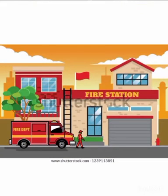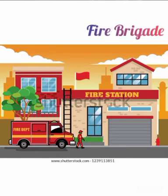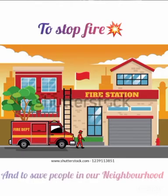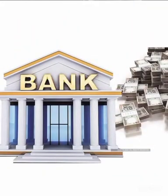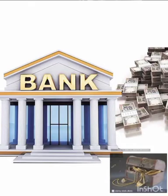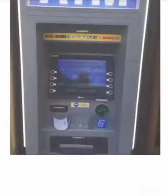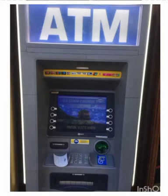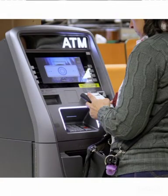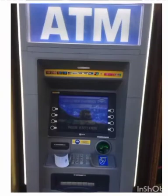Next is fire station. We call the fire brigade to stop fire and to save people in our neighborhood. Next is bank. We keep our money and jewelry safe in a bank. Next is ATM machine. We can withdraw — that means we can take money from the ATM machine at any time of the day.